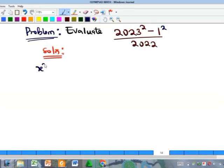Recall that by the rule of difference of two squares, if I have x squared minus y squared, it is equal to x plus y multiplied by x minus y. So that means that the numerator is going to be 2023 squared minus one squared.